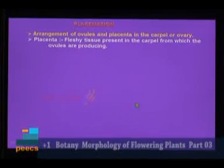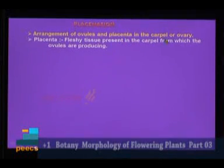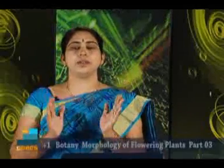Placentation is the arrangement of ovules and placenta in the carpel or ovary. The basal part of the gynoecium is the ovary made up of carpels. Within the carpels, a tissue called the placenta is present, from which the ovules are produced towards the locule or chamber. The arrangement of this placenta and ovules within the carpel is called placentation.